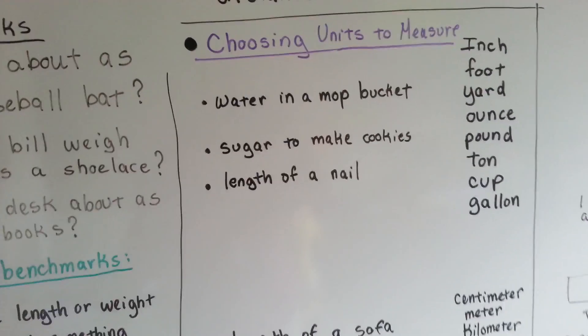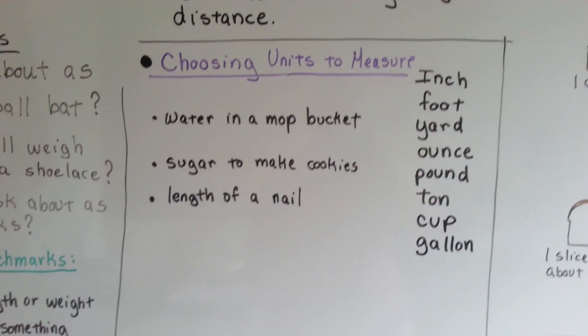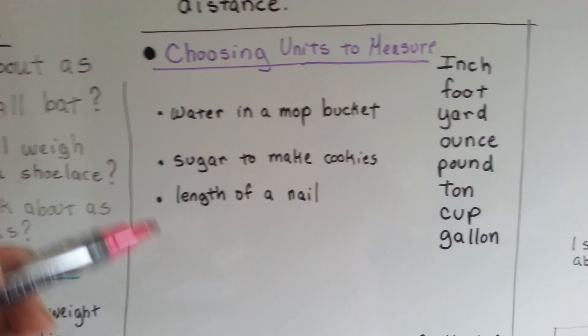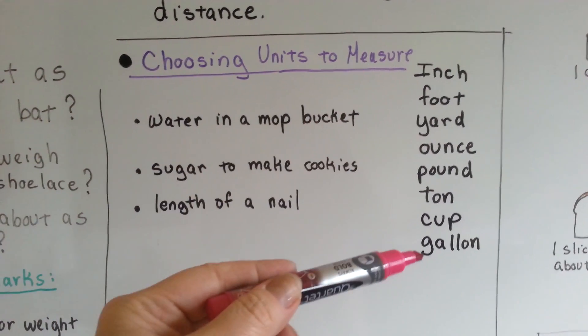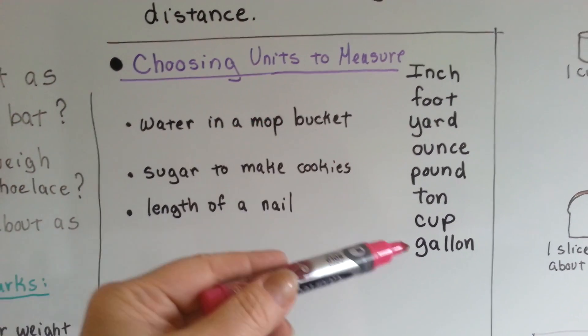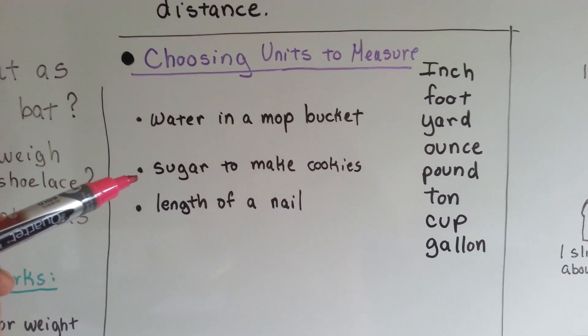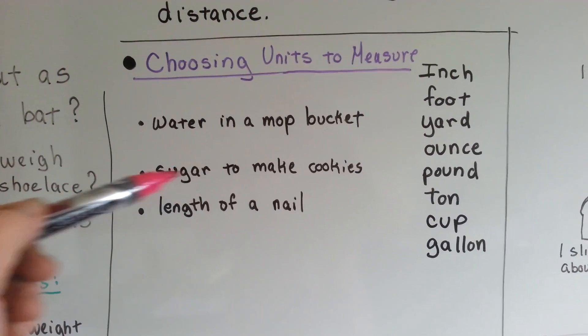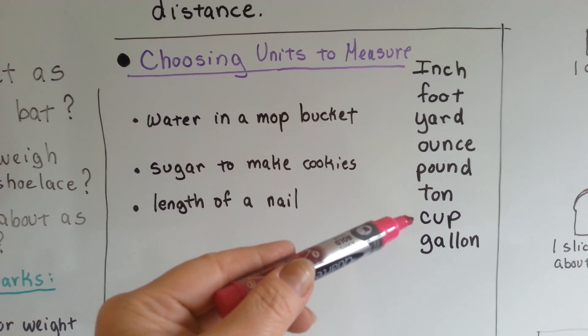So you want to choose units that people will understand, and that will make sense. If I said, how much water is in a mop bucket? Would you say an inch, or would you say about a gallon? It's probably about a gallon to mop a floor, and to rinse the mop out. What if I said, how much sugar would you need to make cookies? Would you say an inch, or would you say a cup? Well, you'd say a cup.